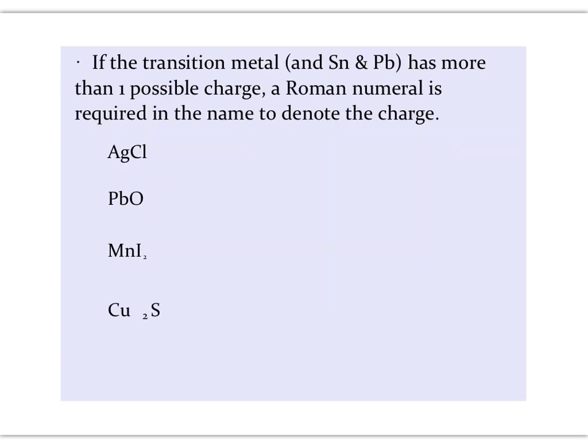We're also going to group in tin and lead with the transition metals. Tin and lead are in group 4A. We didn't assign a charge to that group, and so we're going to use a Roman numeral in the names of compounds that have tin and lead.